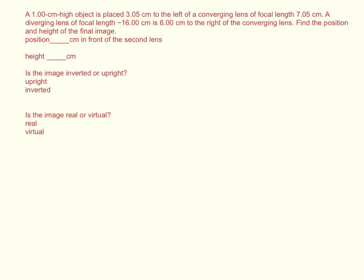A one-centimeter high object is placed 3.05 centimeters to the left of a converging lens of focal length 7.05 centimeters. A diverging lens of focal length negative 16 centimeters is 6 centimeters to the right of the converging lens. Find the position and height of the final image.